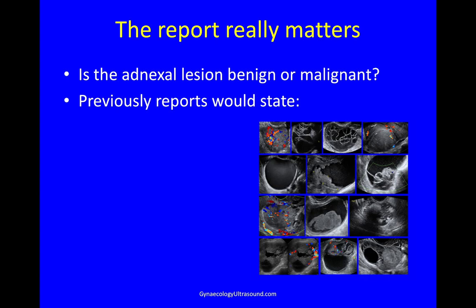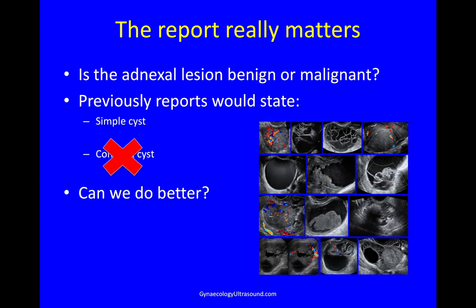We have a simple cyst or a complex cyst, but these examples are all complex cysts and it means absolutely nothing. Can we do better? Can we describe something that's either normal or functional, benign or borderline, invasive or metastatic to the ovary?